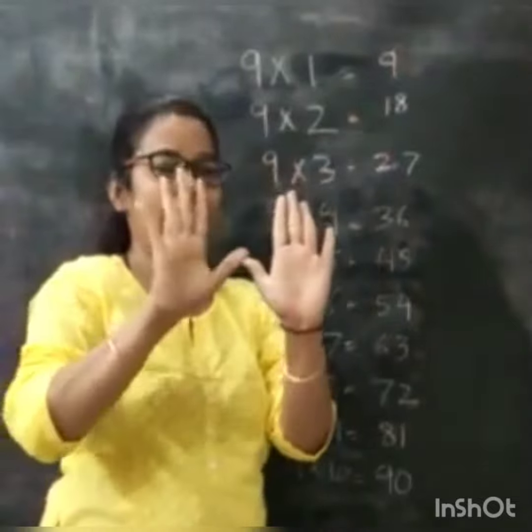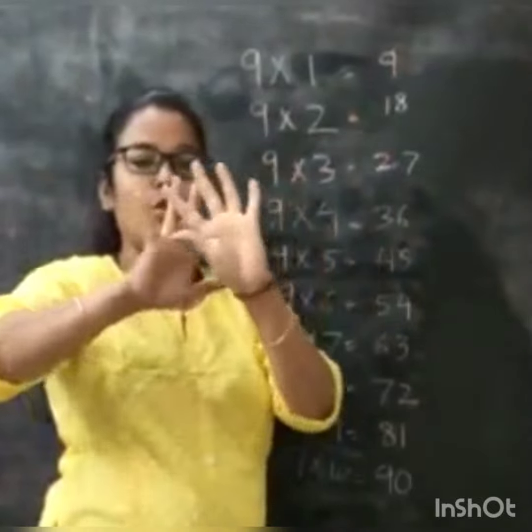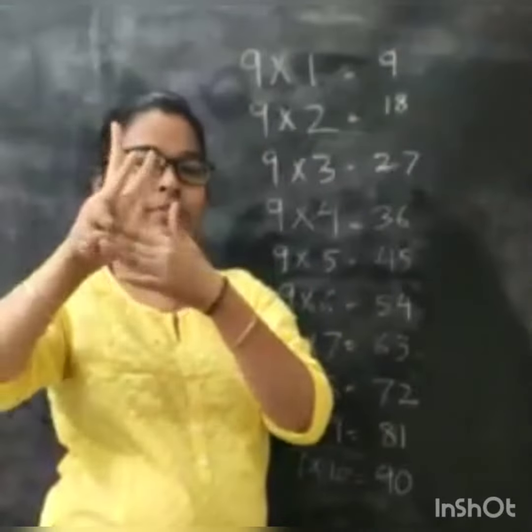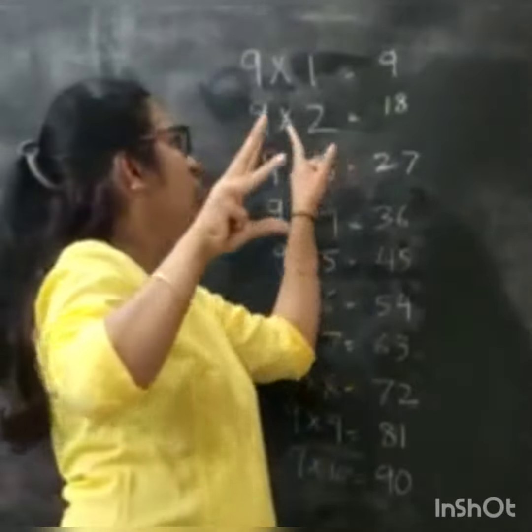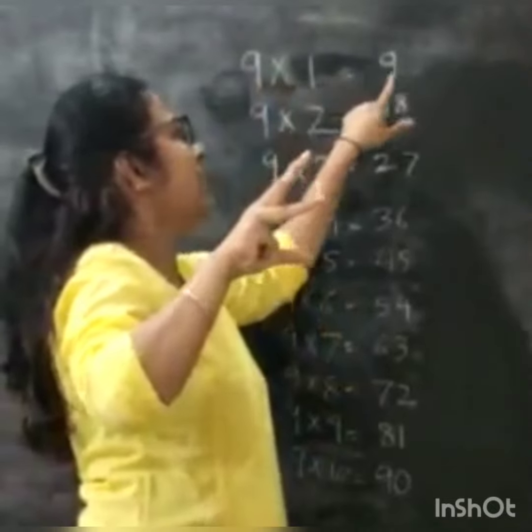So total we have 10 fingers. I closed my first finger. How many fingers open? 9. So 9 times 1 is 9.